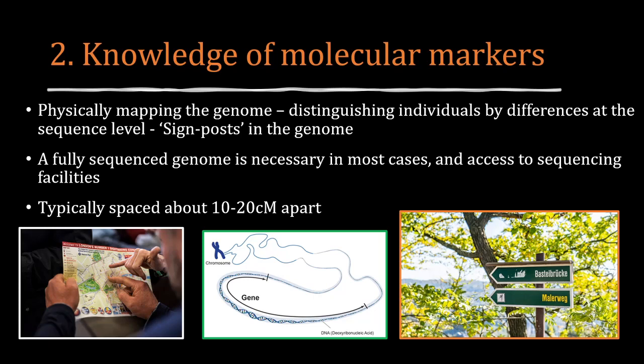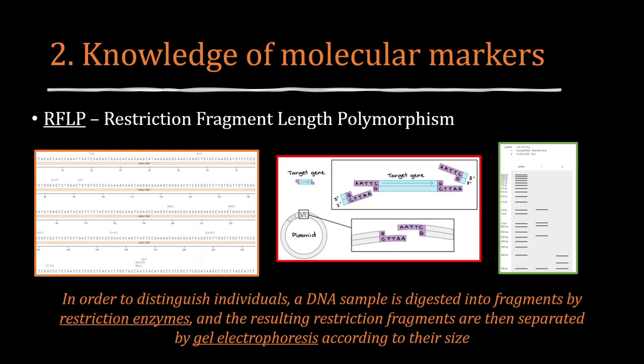There are many kinds of molecular marker. RFLPs — restriction fragment length polymorphisms — are polymorphisms identified by digesting DNA using a restriction enzyme, appearing within sequences recognized by these enzymes. To distinguish individuals, a DNA sample is digested into fragments by restriction enzymes and the resulting restriction fragments are separated by gel electrophoresis according to their size.